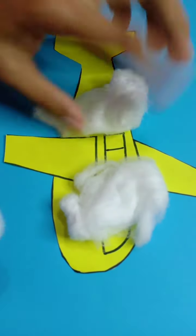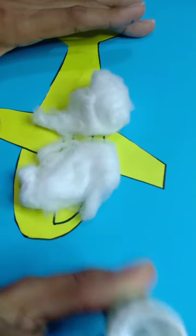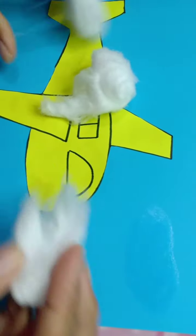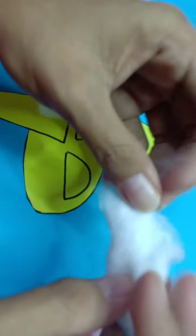Now I'm going to use cotton wool. This is for clouds. I will put it in here. Apply the glue, put it like that.